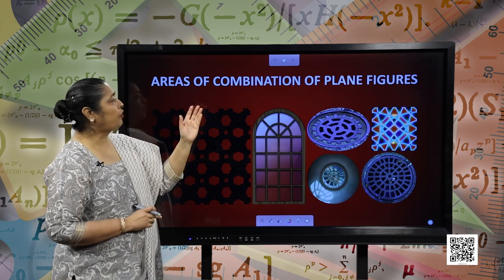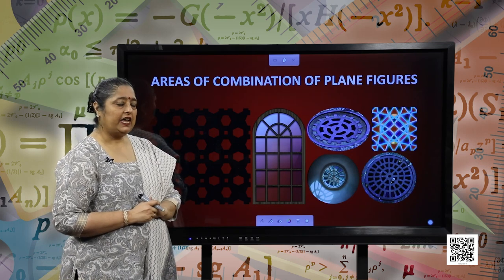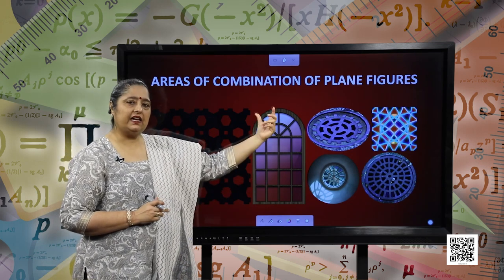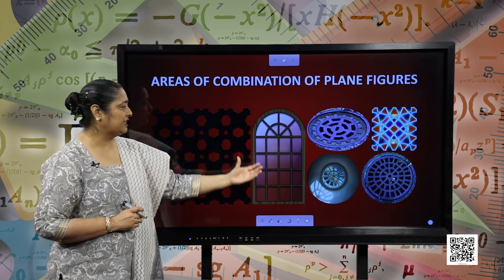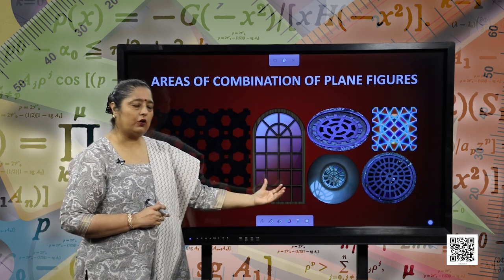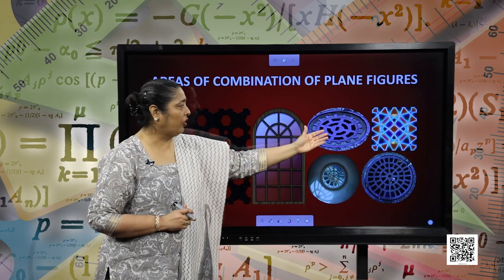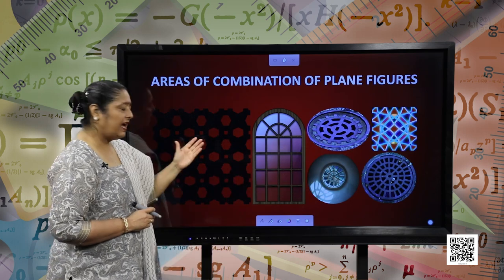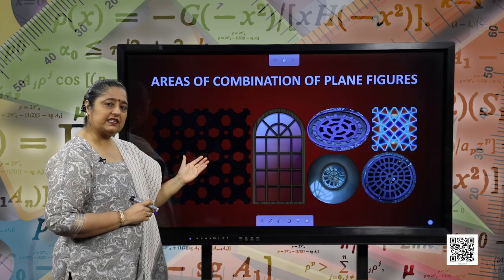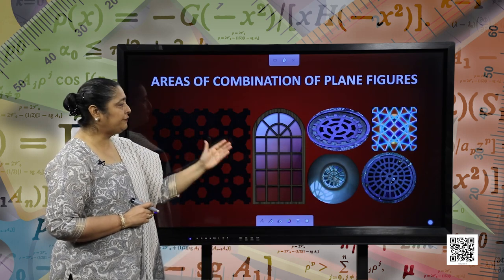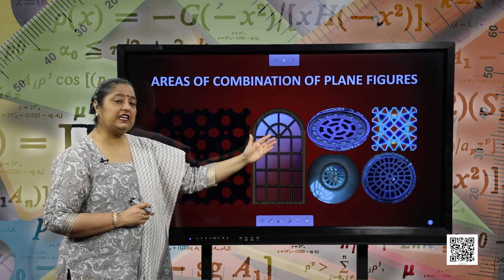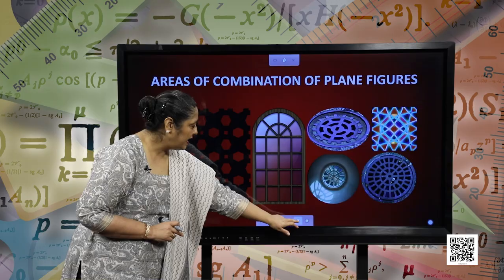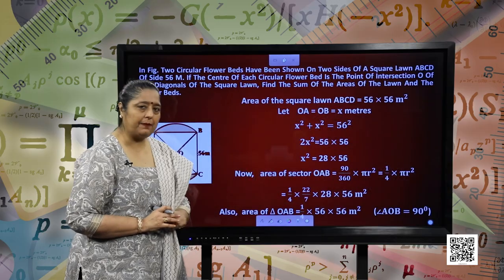Areas of combination of plane figures. In each object, you can see a combination of plane figures. This is a window, a manhole, another design, another manhole and another design of a window. You can see different figures in each object. So let us move forward and see some examples.